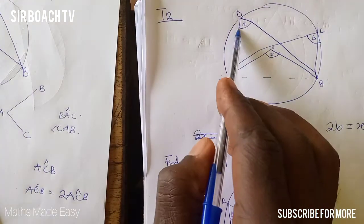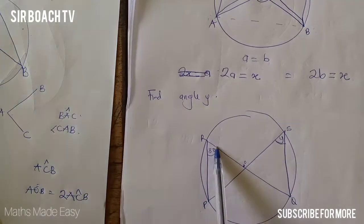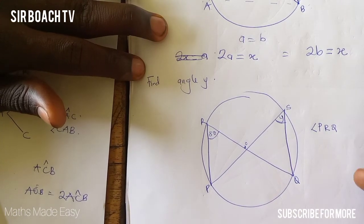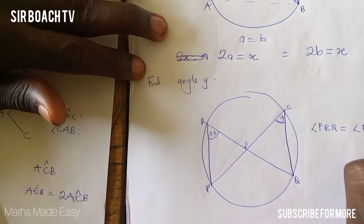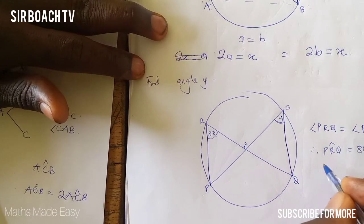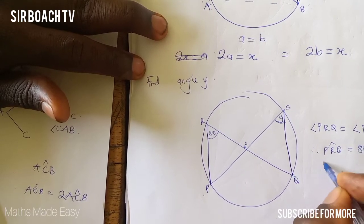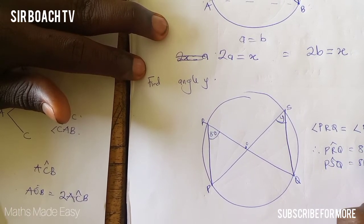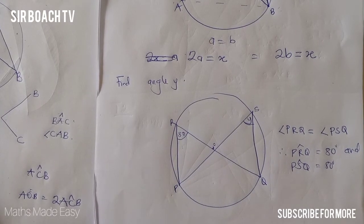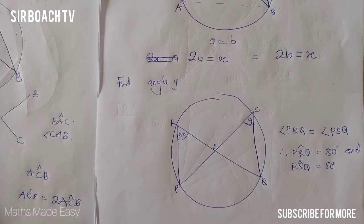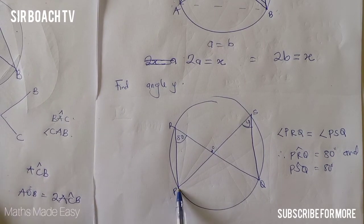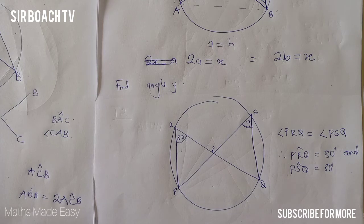Let's take an example: find Y. From the theory, the angle here and the angle here are the same. This angle is called angle PRQ and it is equal to angle PSQ. Therefore angle PRQ equals 80 degrees and angle PSQ is also equal to 80 degrees. That is all we are saying — those two angles are the same.